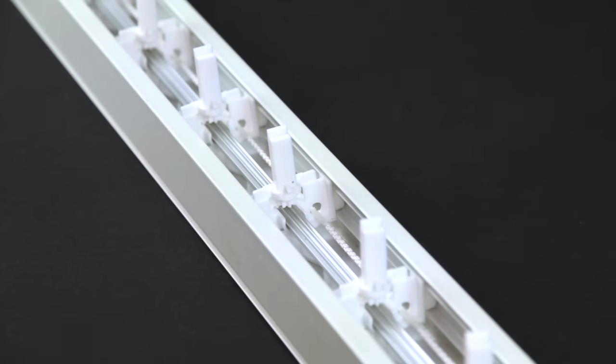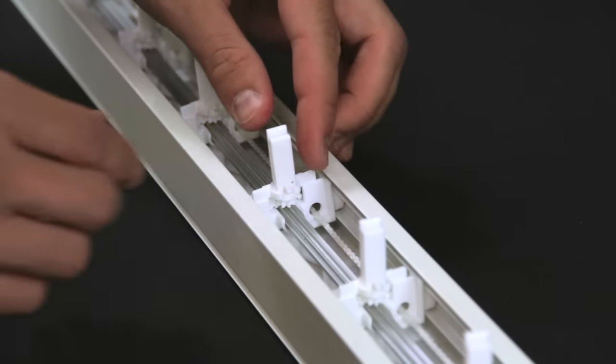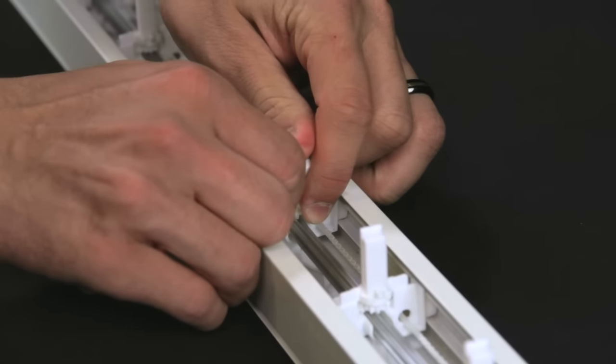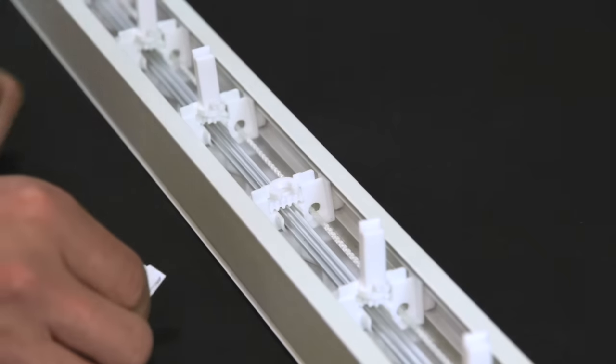For demonstration purposes, we have removed the veins and the head rail and placed it on a flat surface. However, this repair may be done with the blind still hanging.